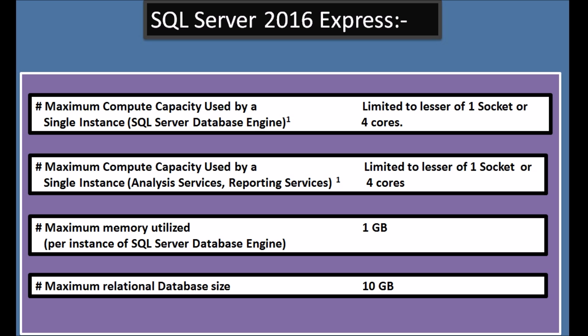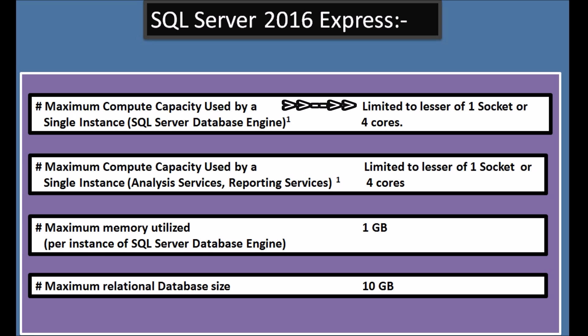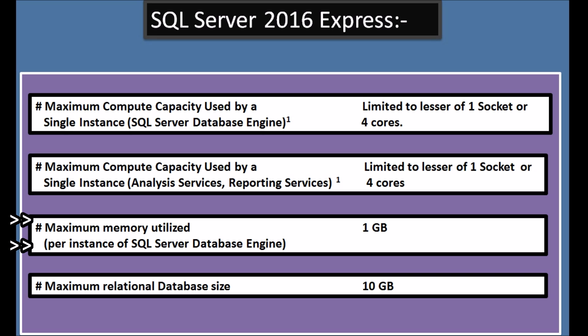Before we start let us see some important details. On SQL Server 2016 Express Edition there are some limitations because it is a free version. The maximum computing capacity used by a single instance of SQL Server database engine is limited to the lesser of one socket or four cores. Maximum memory utilization per instance of SQL Server database engine is 1 GB — no matter how much RAM your system has, SQL Server Express Edition will only utilize 1 GB. Maximum relational database size is 10 GB, meaning the database size cannot grow more than 10 GB.